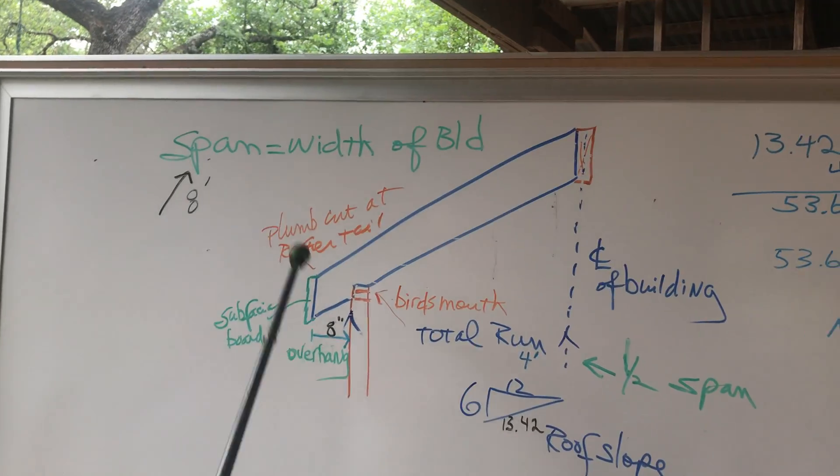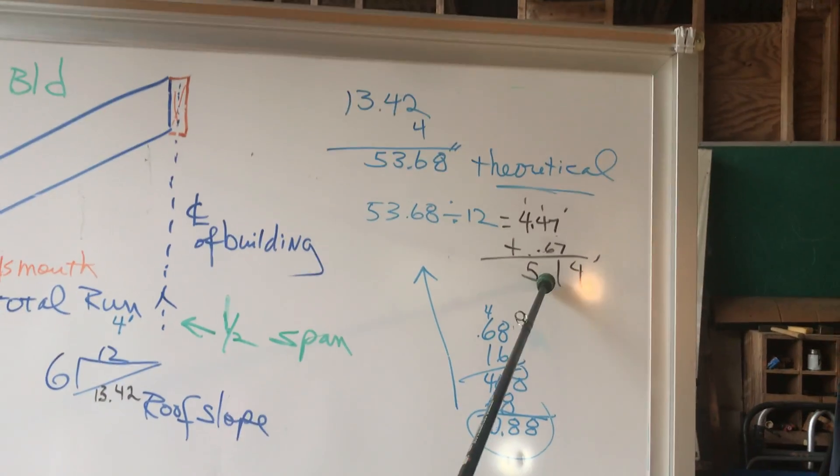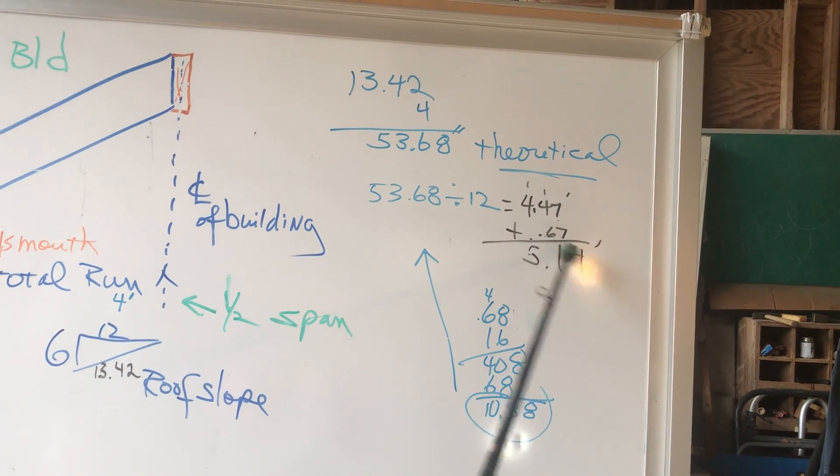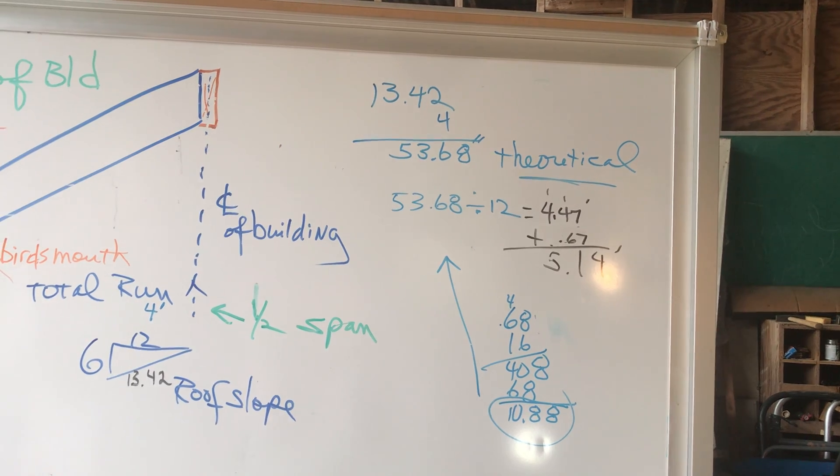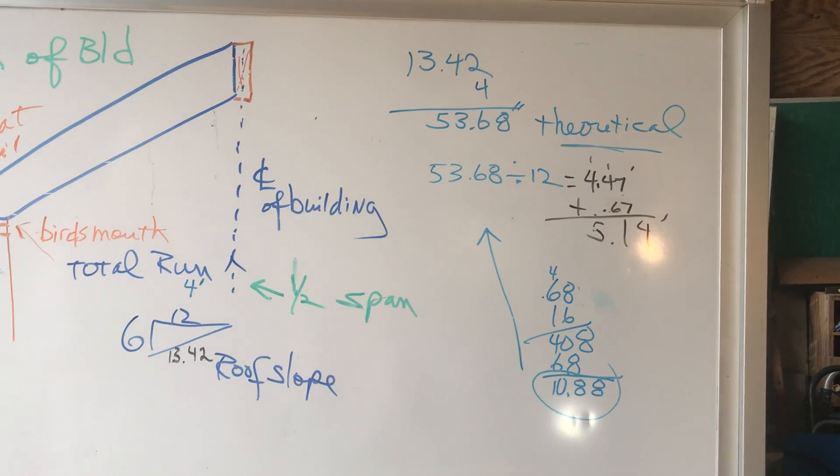And so, the engineer scale for that is 0.67 feet. So, I add that. Now, I have 5.14 feet. Kind of confusing sometimes.